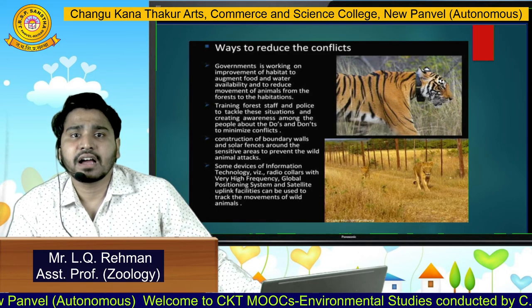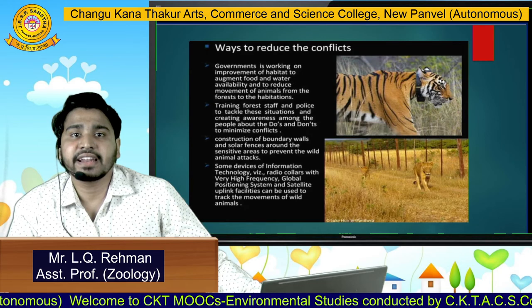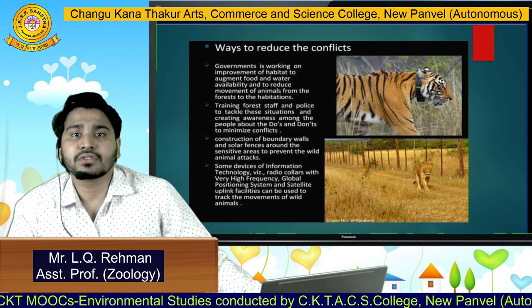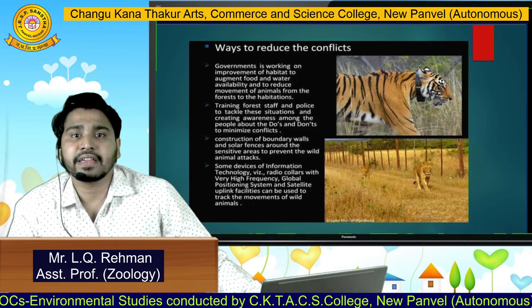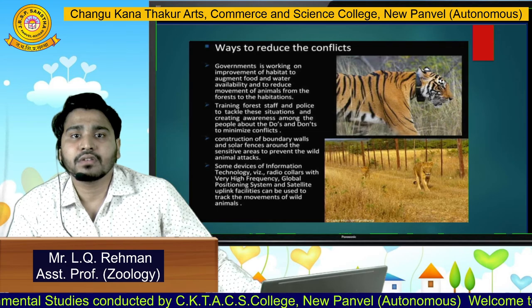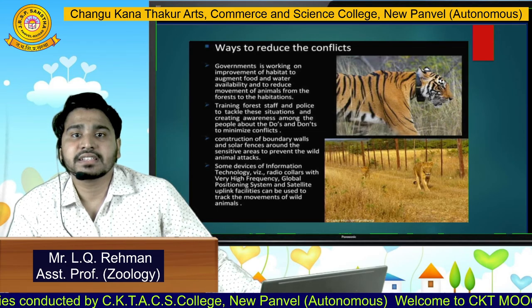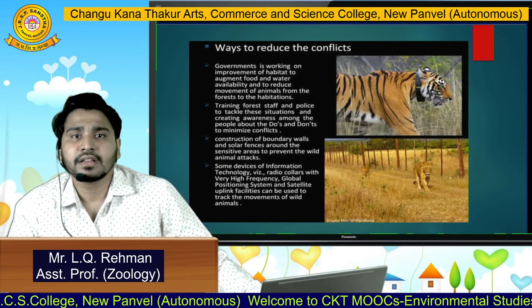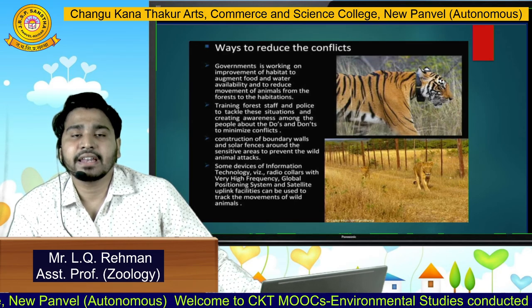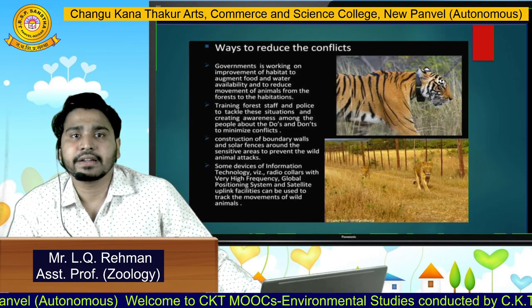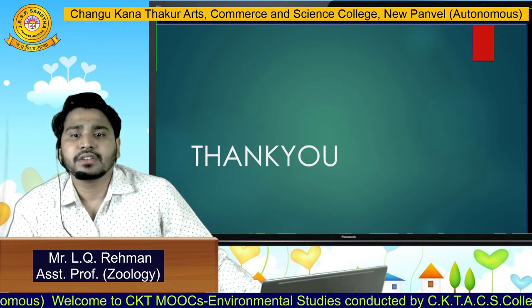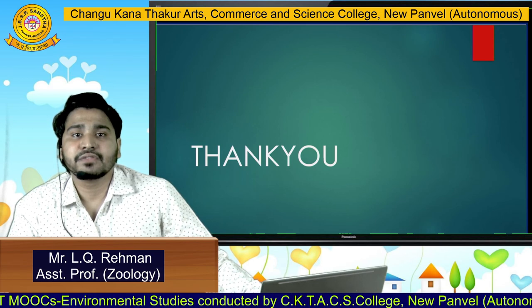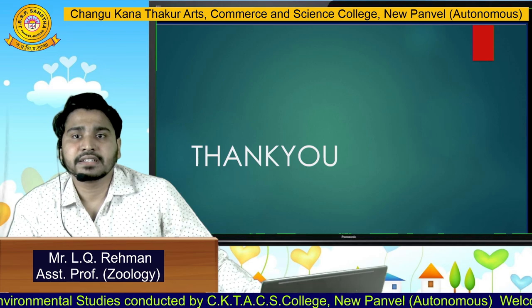Training forest staff and police to handle these situations and creating awareness among people about the do's and don'ts to minimize conflicts is also one way. Construction of boundary walls and fences around sensitive areas to prevent wild animal attacks is also one of the ways we can reduce man-wildlife conflict. So students, you all must have understood what man-wildlife conflict is and what are the ways we can prevent these conflicts in future.